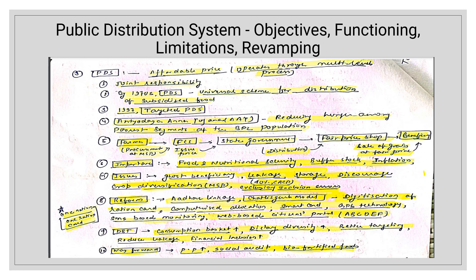Reforms necessary for PDS: linking with Aadhaar card model is very important. Using GPS technology to track trucks and monitor where food is stored or distributed. SMS-based monitoring and a web-based citizens' portal for updates. One Nation One Ration Card scheme to allow portability of ration cards across the country.